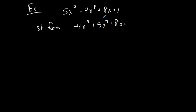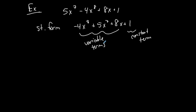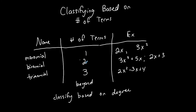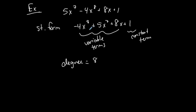This polynomial has three variable terms and one constant term. The highest exponent is 8, so it's an 8th degree polynomial. It has four total terms, so it doesn't fit monomial, binomial, or trinomial. Since it has more than three terms, we label it based on the degree — it's an 8th degree polynomial expression, since it's written in the form of an expression.